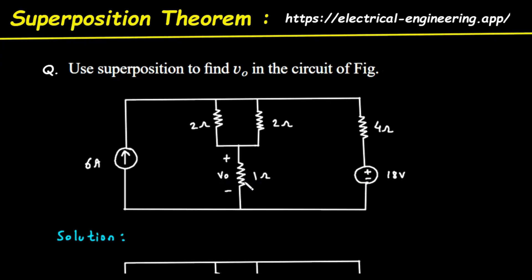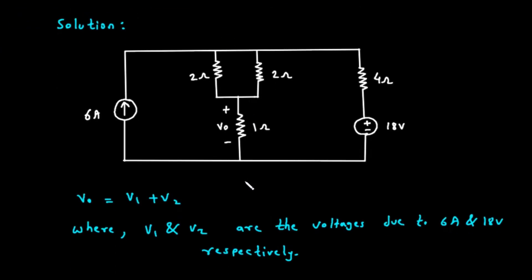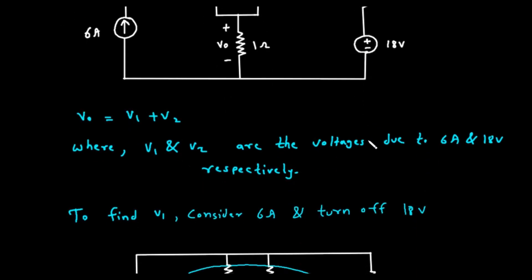Let's apply this. We'll say that our final voltage V0 is the sum of two parts. The equation is: V0 equals V1 plus V2. V1 will be the voltage across the 1-ohm resistor when only the 6-amp current source is active, and V2 will be the voltage across that same resistor when only the 18-volt voltage source is active. Let's find V1 and V2 one by one.